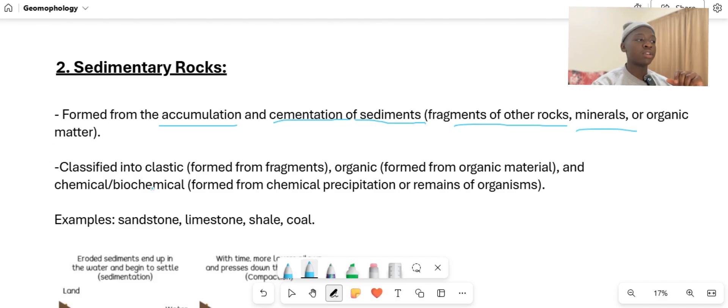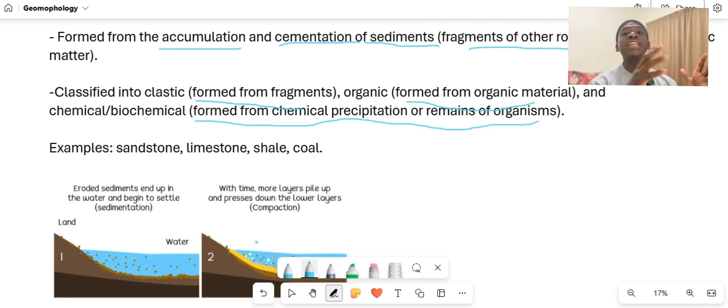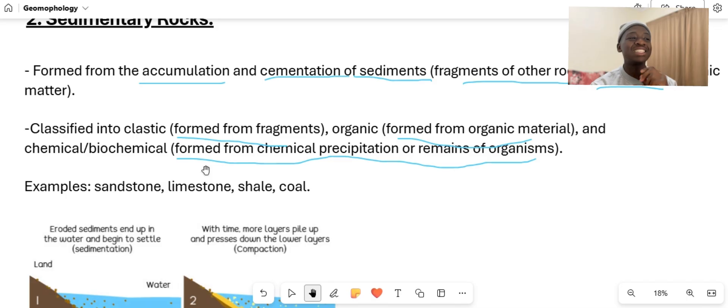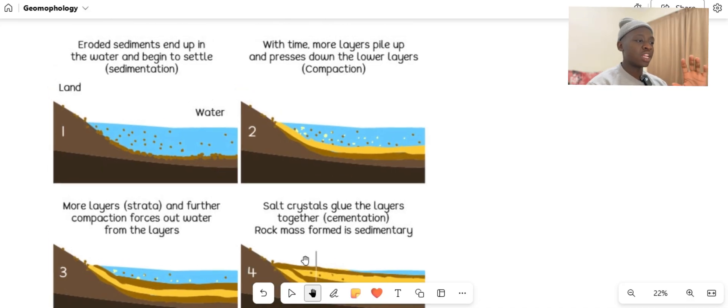It is classified into clastic, which is formed from fragments, or organic, which is from organic matter, and chemical or biochemical formed from chemical precipitation or remains of organisms. For grade 10, that information is too vague, just leave it out for now. Just understand how the sedimentary rock is formed by what? From the accumulation and cementation of sediment. Maybe you might be confused. Let me explain properly here.